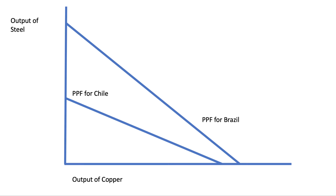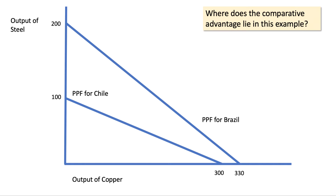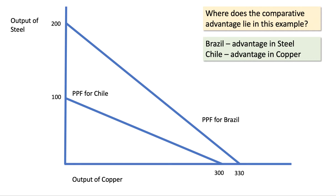That's for Chile, and here's the one for Brazil. You can see that Brazil can produce more of both, so in that sense it has an absolute advantage in both steel and copper. Putting some numbers on here, this is where you start to think about comparative advantage. In this example, Chile is only half as good at producing steel, but it's pretty close to Brazil in terms of copper. So Brazil has the relative advantage in steel and Chile in copper.